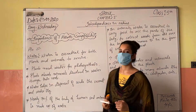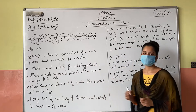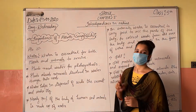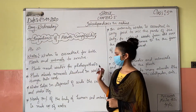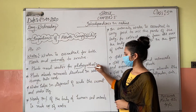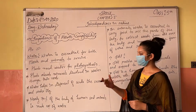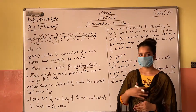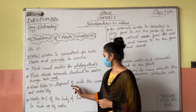Water is an abiotic component. Water is essential for both plants and animals to survive. This is why plants absorb minerals dissolved in water through their roots.